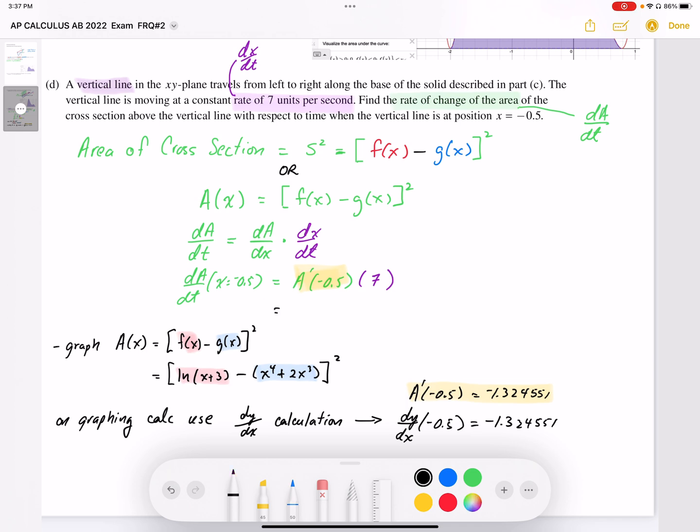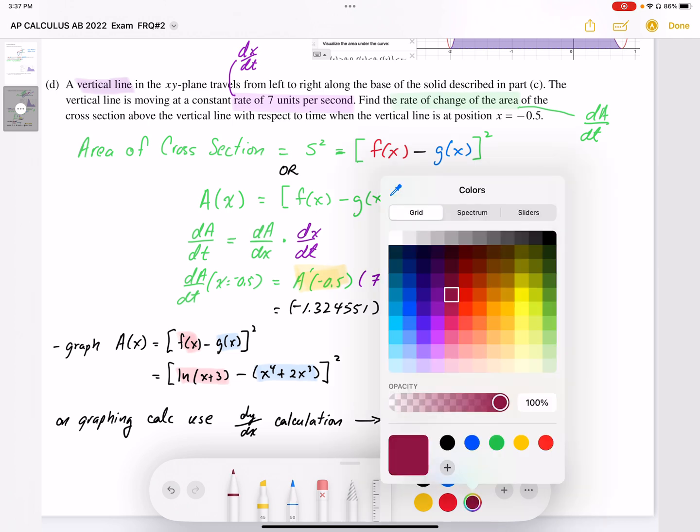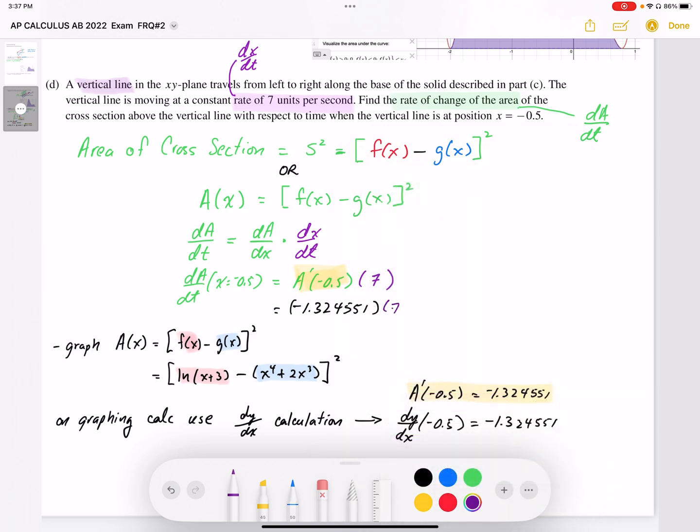And then replacing that A prime value, I'm going to end up with negative 1.324551 times 7. And that gives me a value of negative 9.271. And that's going to be square units per second. So there's my answer.